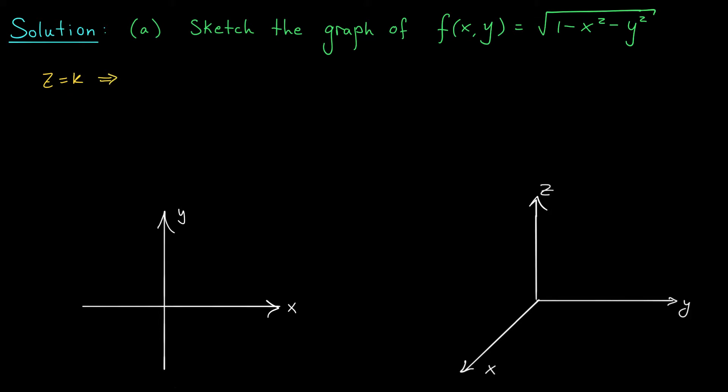By setting z equal to k we get the equation root 1 minus x squared minus y squared is equal to k. Now notice that since k is equal to the square root of some real number k must be greater than or equal to zero. This means that we don't have any level curves below the xy plane. Our graph never dips into the negative z axis.